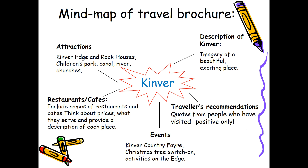So you might need to do a mind map for the Kinva brochure. Start by thinking of a description of Kinva — what it looks like, imagery of a beautiful and exciting place — that's where we use imagery to draw people in. You might like to talk about the attractions: what people can do when they get here. There's Kinva Edge, the rock houses, the children's park, the canal which is lovely for walks, the river for walks and picnics, and the churches if you like historic buildings.